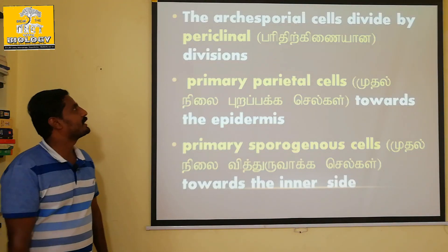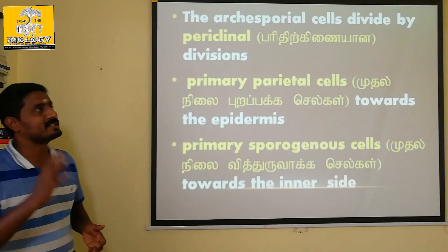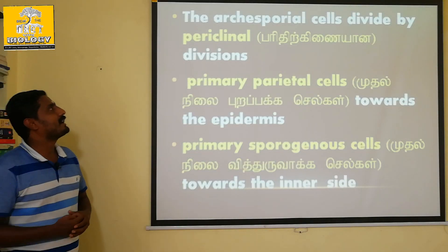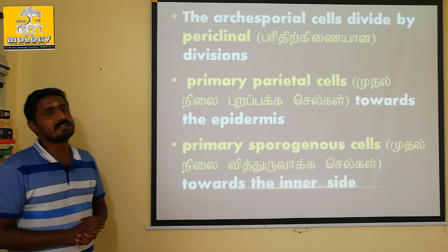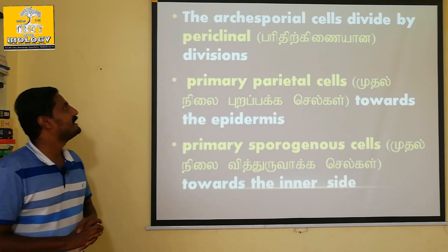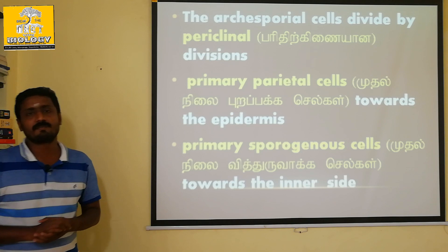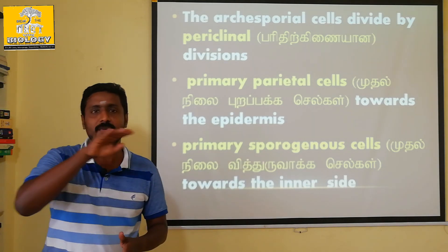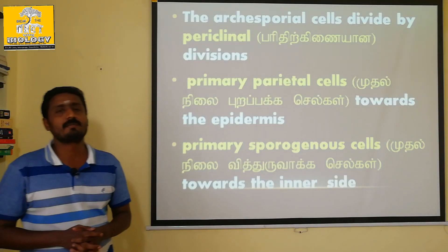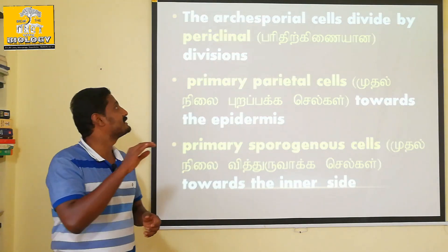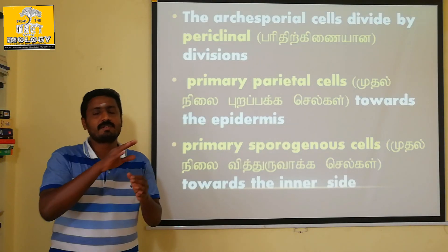Step 3: The archesporium cells undergo periclinal division — that is, a horizontal division — forming two distinct layers.